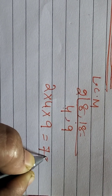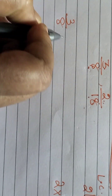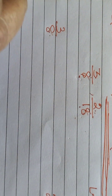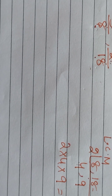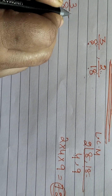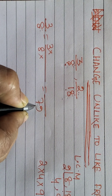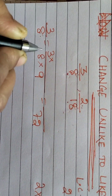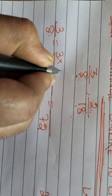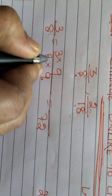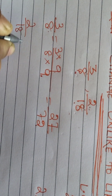So 2 fours are 8, and 8 nines are 72. The LCM is 72. Then we take 3/8. The fraction 3/8 has denominator 8. We need to equalize the denominator to 72 according to the LCM. So 3/8 equals 3 into dash over 8 into dash. How can you make the denominator 72? 8 nines are 72, so we multiply by 9.